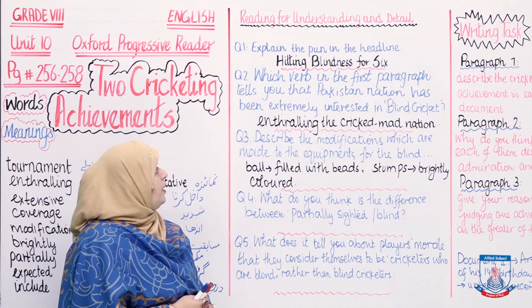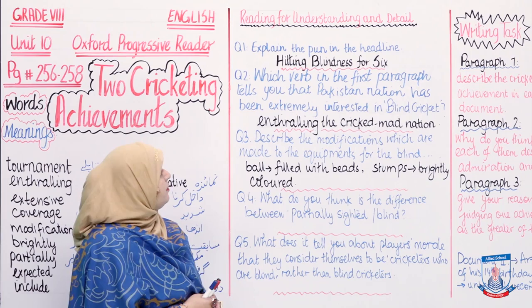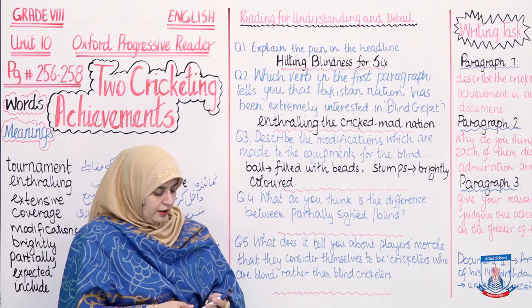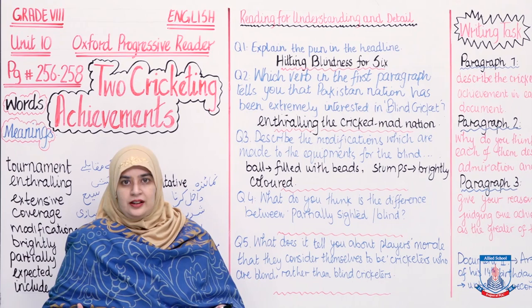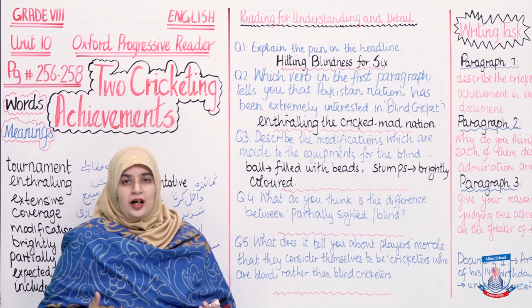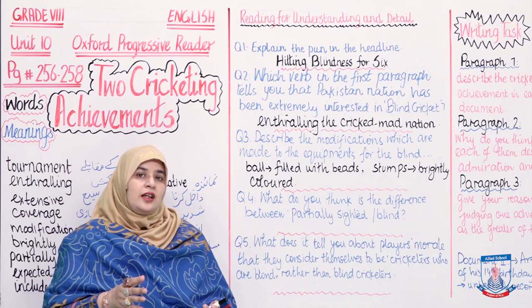Question 2 asks: which verb in the first paragraph tells you that the Pakistani nation has been extremely interested in blind cricket? The answer is 'enthralling' — as in, blind cricket was enthralling the cricket-mad nation. Pakistanis are so passionate about cricket, and blind cricket was actually exciting and captivating them.